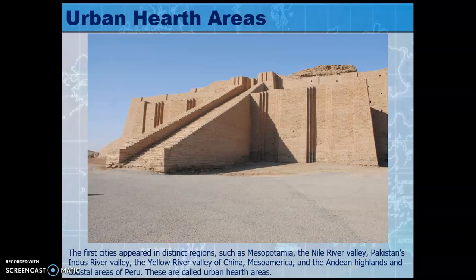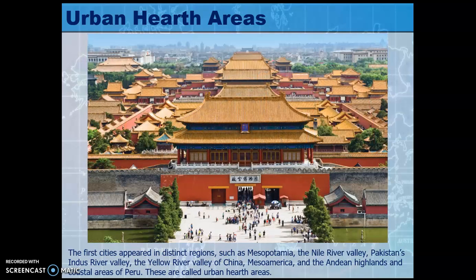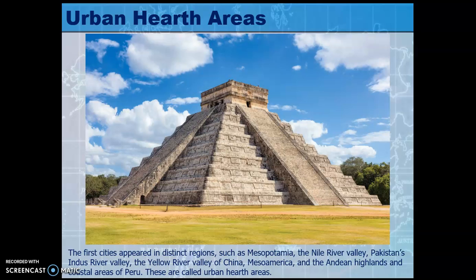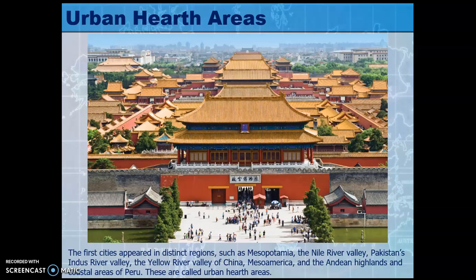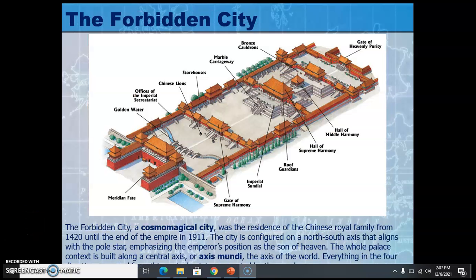Urban hearth areas produced remarkable structures: ziggurats in Mesopotamia, pagodas and shrines, and the Forbidden City in Beijing. Also shown is Kukulcan — what the Spanish called El Castillo — on the Mayan Yucatan Peninsula. These structures organized people around celestial events; this pyramid is essentially a big calendar. The design of the Forbidden City is based on cosmo-magical properties, which we'll discuss further. I'm going to have to cut this off here and come back to this slide in part two of the lecture — see you in just a minute.